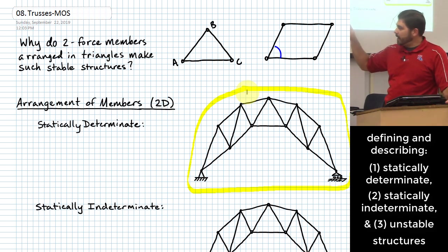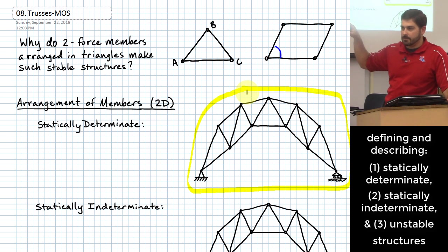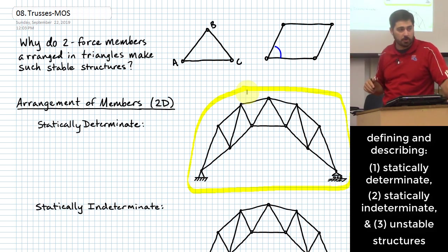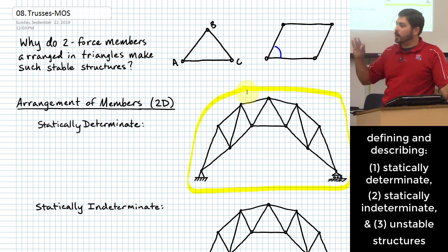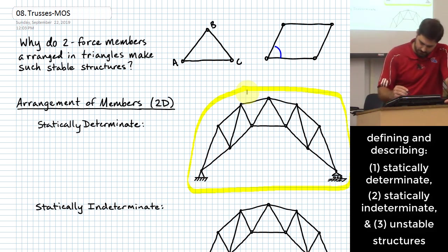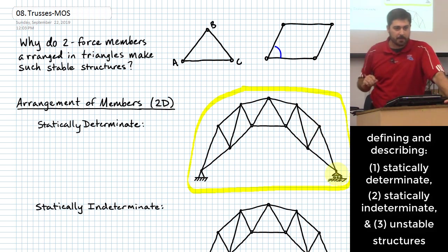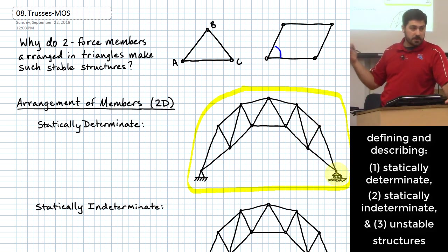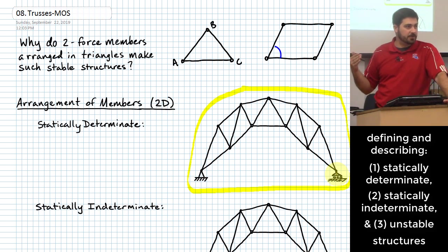Back to the joints: how many equations can we write for each joint? Two for each joint. For this problem, I've got eleven joints, so I should be able to write 22 independent equations for that structure.